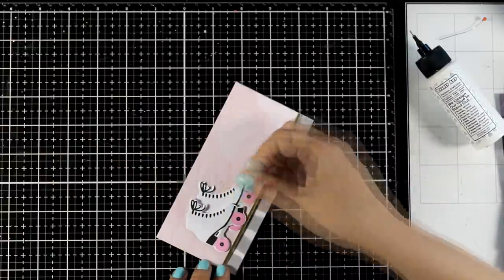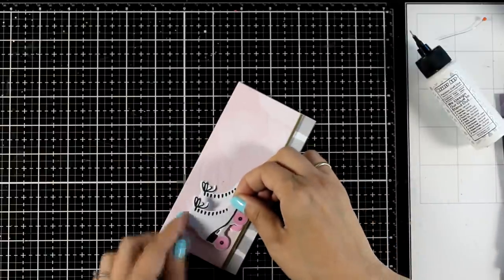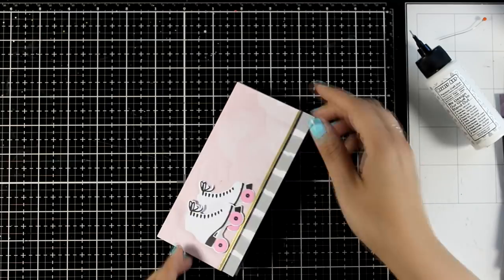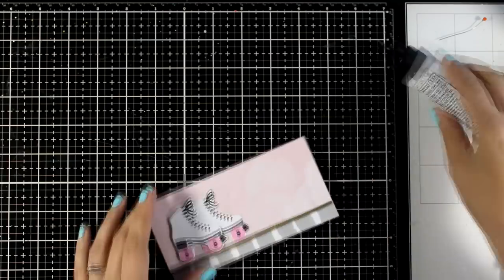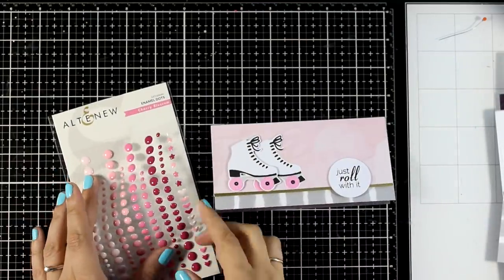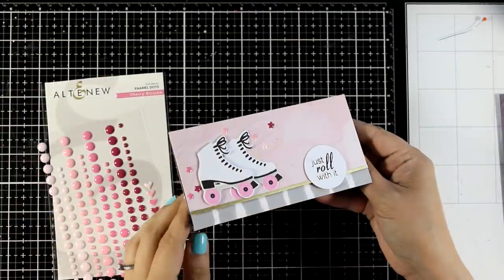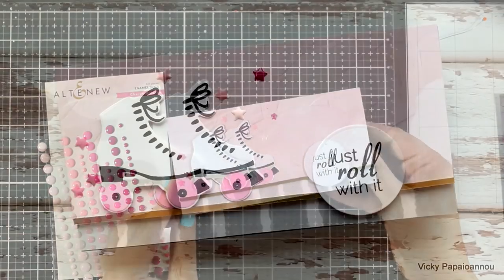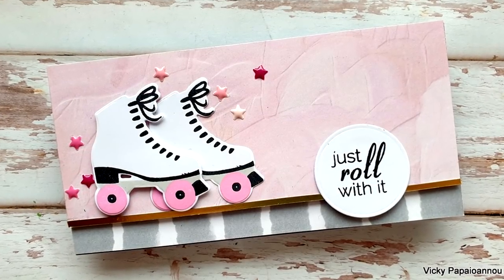That golden strip at the bottom of my pink panel also works as a kind of a ground. As a sentiment I went with just roll with it, I just stamped that with black and cut it out with a circle die and I finished off the design by sticking some enamel stars to make an otherwise simple card look more special.